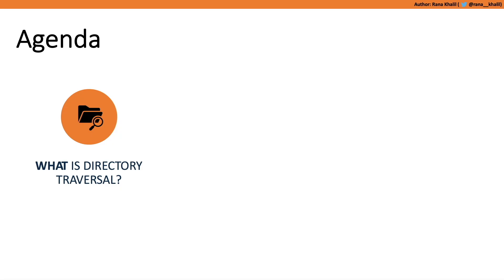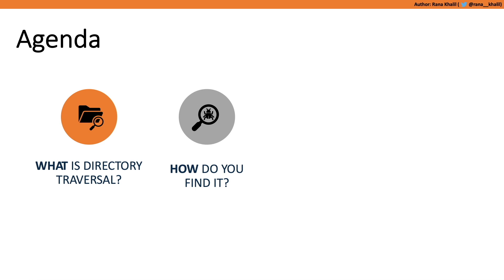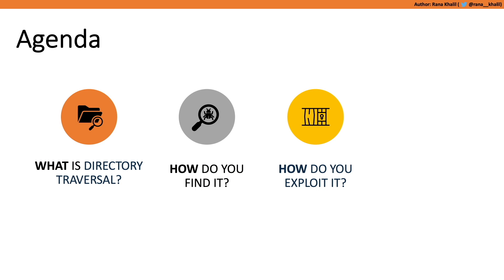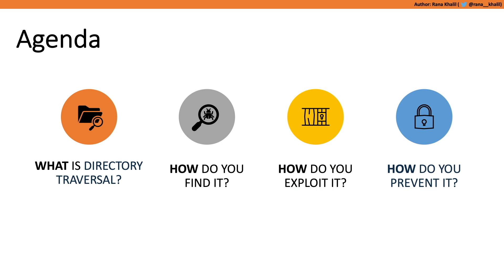Let's get started. The agenda for today is to first cover the technical details behind directory traversal vulnerabilities — what is a directory traversal vulnerability, how common are they, and so on. Next, we'll cover how to find them from both a white box and a black box perspective. Then we'll discuss how to exploit the vulnerability, and we'll end by covering techniques to prevent or mitigate directory traversal vulnerabilities.